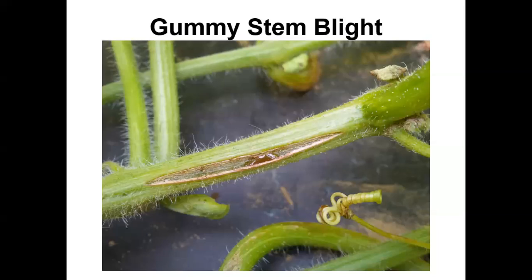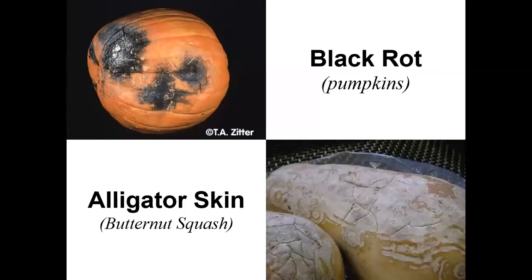Gummy stem blight is next on the list, and it has a bunch of different symptoms that depend on the variety being grown and also the time of infection. I tend not to see the leaf symptoms as much as I see it on the stems themselves. You get these very long, almost split-like lesions on the stem, producing a gummy exudate — which we also see with Fusarium, discussed in part two. This gummy exudate at the edge of the lesion is produced by the plant as a response to damage from the pathogen, not the pathogen itself.